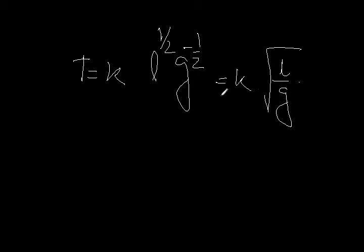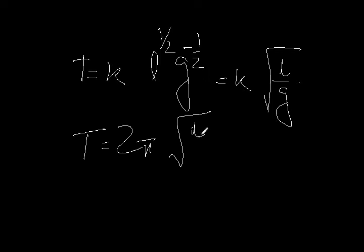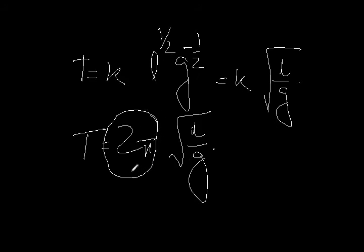Those who have studied pendulums know the actual formula is T equals 2π times the square root of L over G. This reveals a key limitation of dimensional analysis: you cannot determine the specific constant — here 2π — from this method alone. It must be calculated either by experiment or some other approach. Another limitation is that you cannot involve more than three variables.